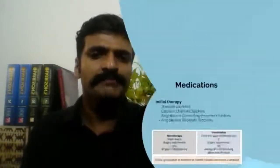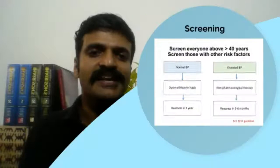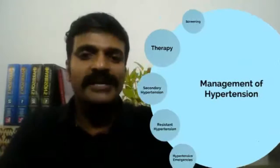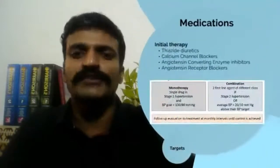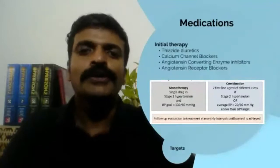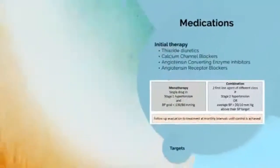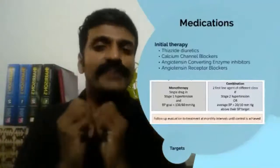Moving on to pharmacological therapies: the four initial first-line drug classes are thiazides, calcium channel blockers, ACE inhibitors, and ARBs. You can choose any of them — thiazides, calcium channel blockers, ACE inhibitors, and ARBs are all equally good first choices.